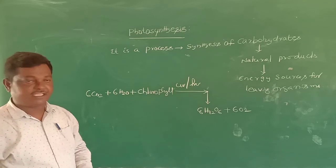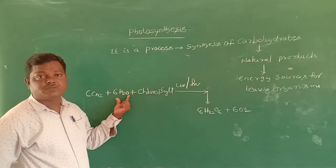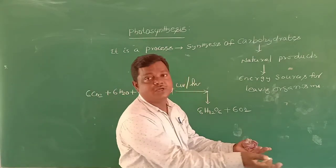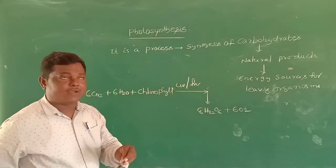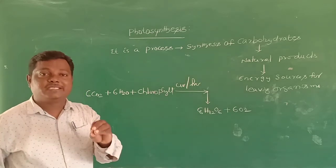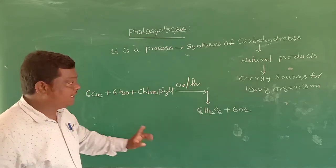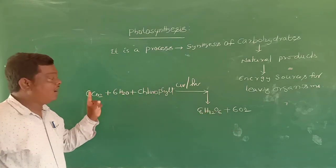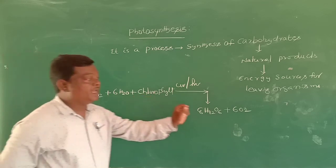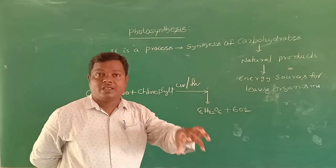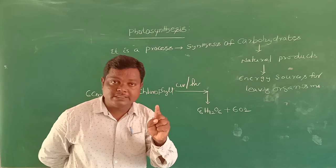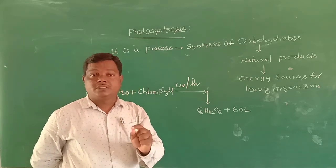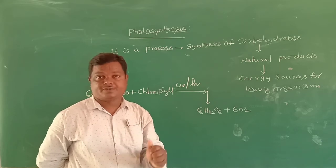In some books and texts, we will see 6 moles or 12 moles of H₂O. Here we have 6 moles of H₂O, so the photosensitizer reaction requires only 6 moles of water molecules. Regarding the release of oxygen — whether it is from carbon dioxide or water molecule — the reaction confirms that oxygen is released from the water molecule only.